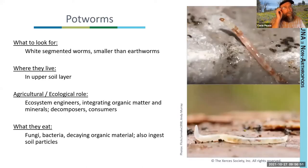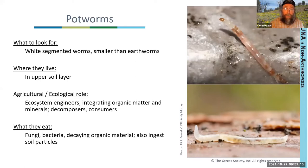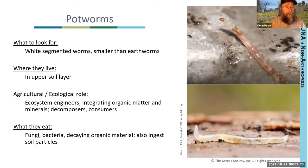Potworms are small white segmented worms, smaller than earthworms. These worms feed on bacteria, protists, fungi, and decaying organic matter, and they tend to live in the upper soil levels. They influence soil structure through burrowing and mixing of materials, and are often called ecosystem engineers because they're really mixing and moving organic matter around at the small scale.